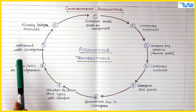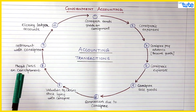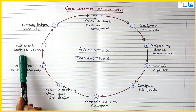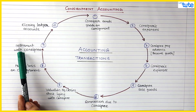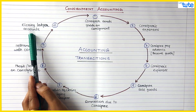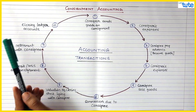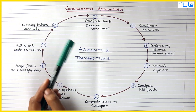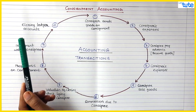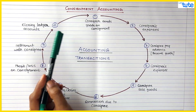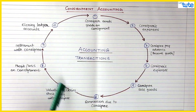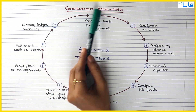Settlement is done only if specified in the question; otherwise there would be no settlement entry. Finally, you will close all the ledger accounts in the books of both the consigner and consignee. We are going to see what those ledger accounts are and how the journal entries are passed. This is the basic accounting cycle for consignment transactions.